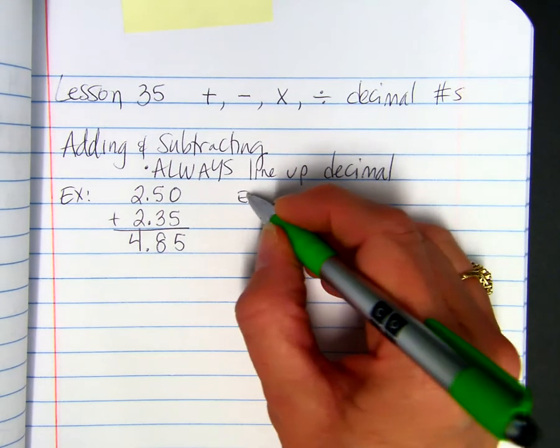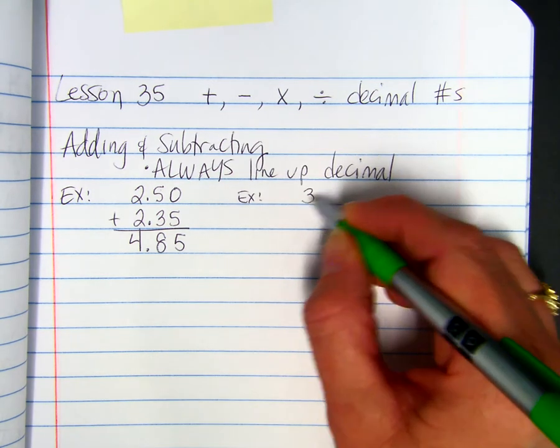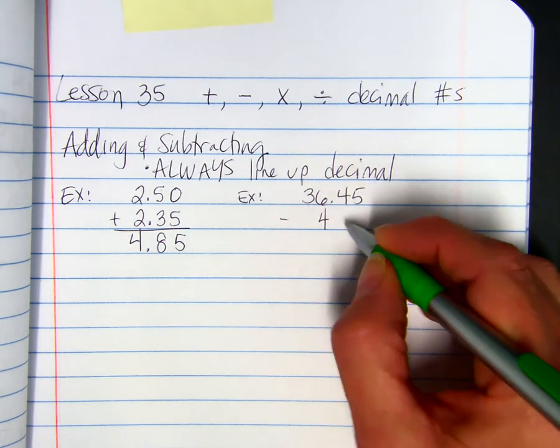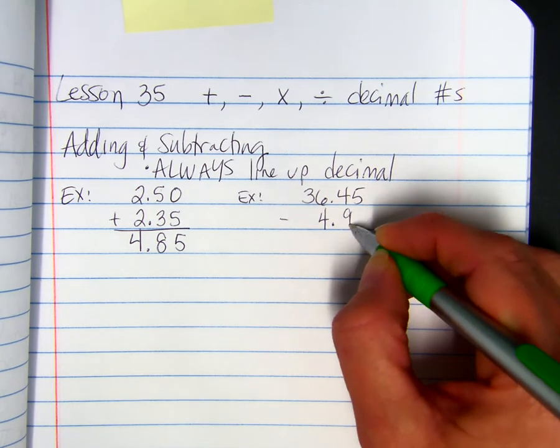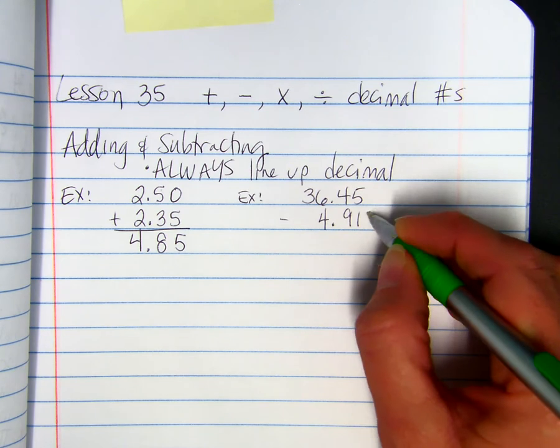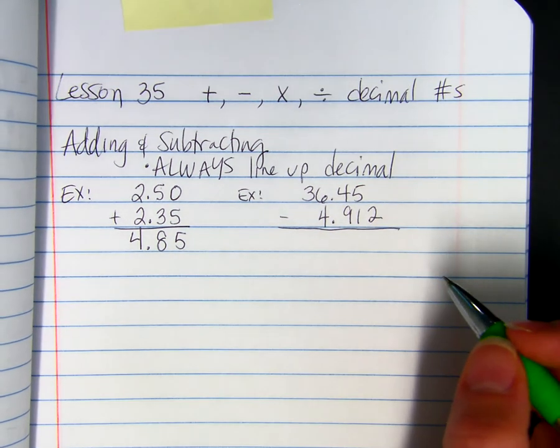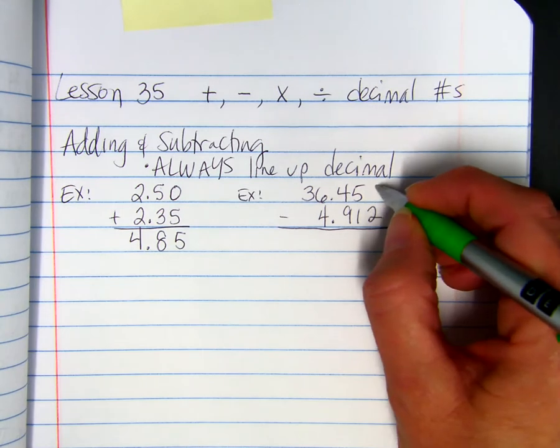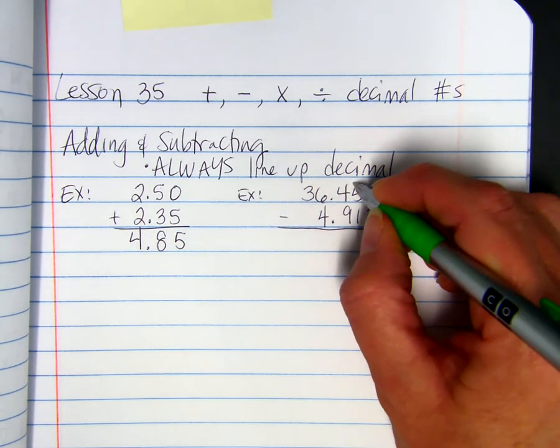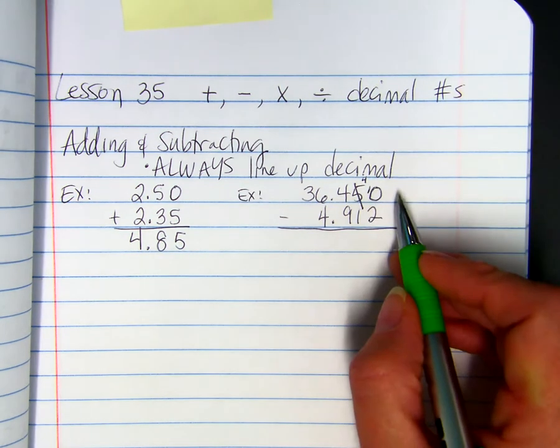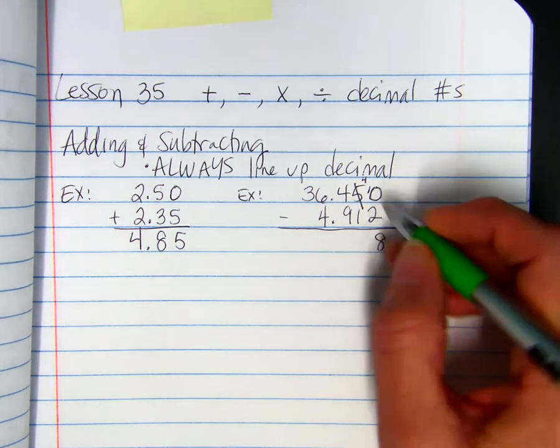And, here's an example with subtracting. So, 36.45 minus 4.912. So, in this problem, we're going to need that terminating zero. So, when we borrow from the 5, make it a 4. We can make this 10 minus 2, which is 8.